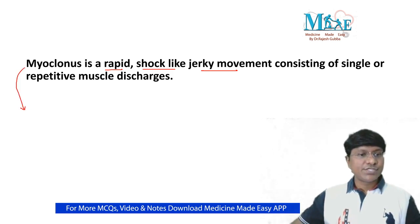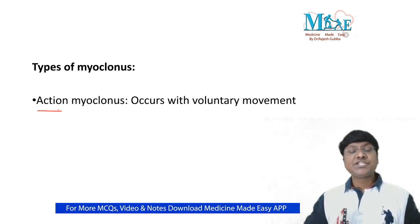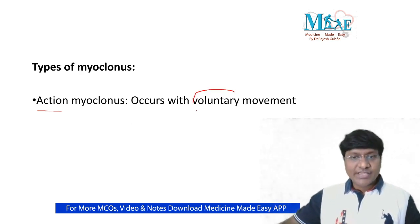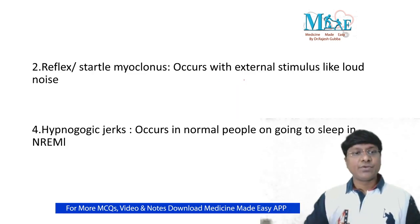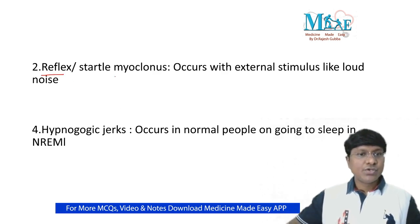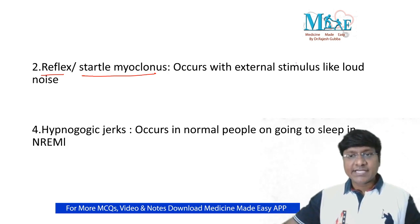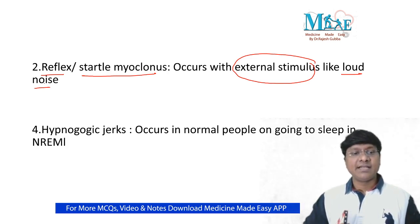We have various types of myoclonus. One among them is action myoclonus — the word itself tells you it is the one which occurs with voluntary movement. Another type is reflex or startle myoclonus, which occurs with an external stimulus like a loud noise.